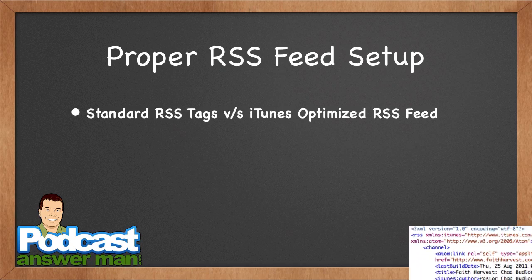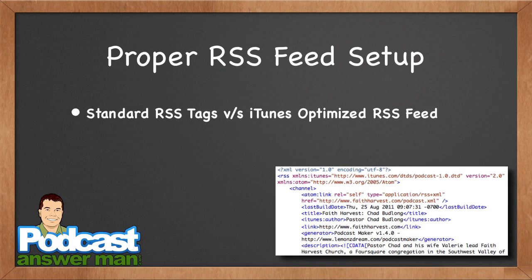An RSS feed is nothing more than a coded file with a bunch of text inside of it. This text is all code — it's kind of like HTML, just a different language with different tags. Your WordPress site and a lot of other sites have RSS built in, and you could technically take that RSS feed and send it to iTunes. The problem is iTunes is not going to get some very important information it needs.